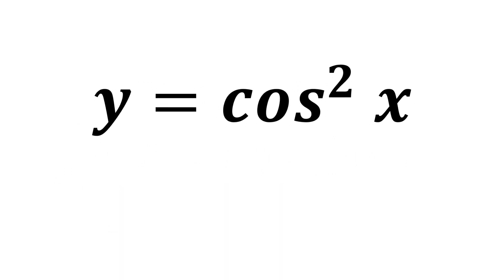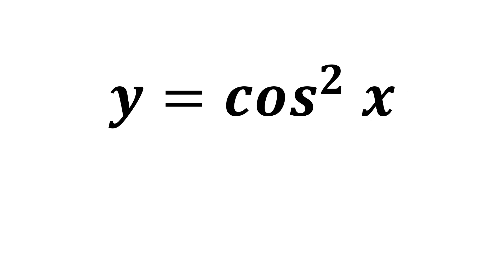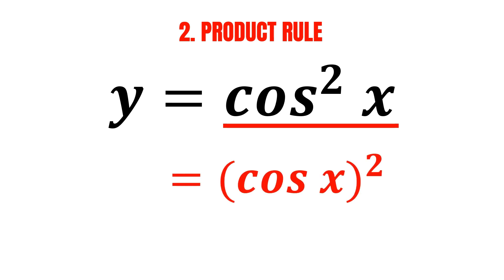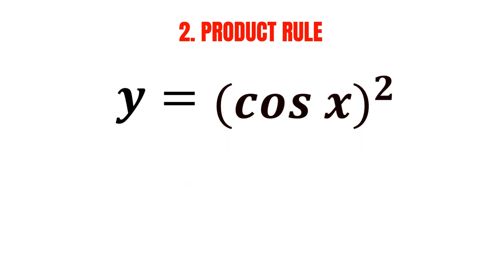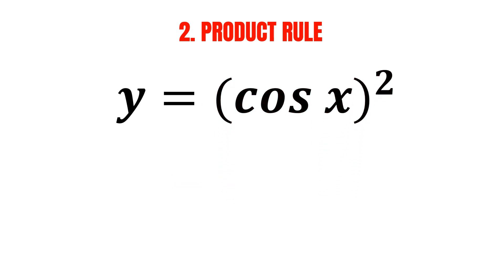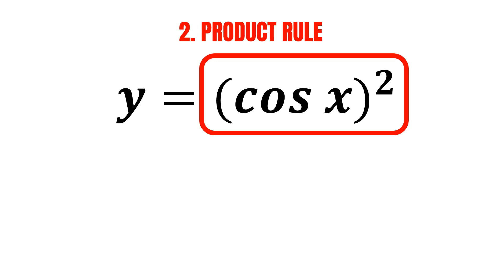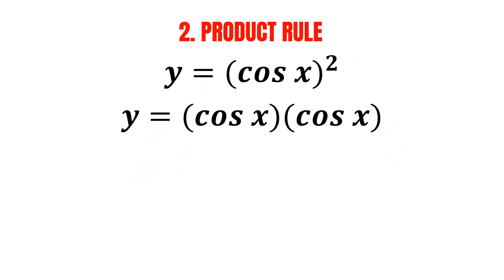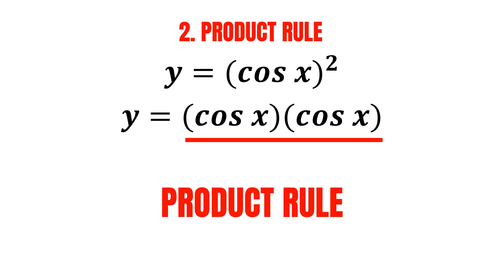Now let's proceed to the second method, which is the product rule. We can rewrite cosine squared x as cosine of x multiplied by another cosine of x. Since it is a product of functions, we can apply the product rule.